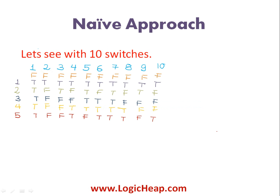Using the naive approach with 10 switches: initially all are off. In the first pass, you toggle all of them so they all become true — they are all on. In the second pass, you toggle all switches that are multiples of 2, so switches 2, 4, 6, 8, 10 become false. In the third pass, change all multiples of 3; in the fourth, multiples of 4; in the fifth, multiples of 5. In the sixth pass, since 6 is a multiple of 6, switch 6 changes to false.